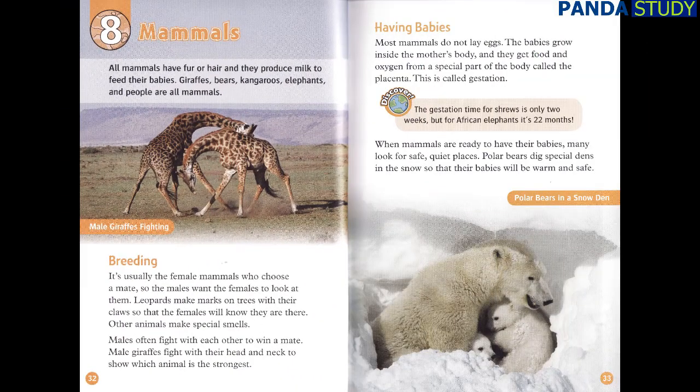Chapter 8: Mammals. All mammals have fur or hair and they produce milk to feed their babies. Giraffes, bears, kangaroos, elephants and people are all mammals.